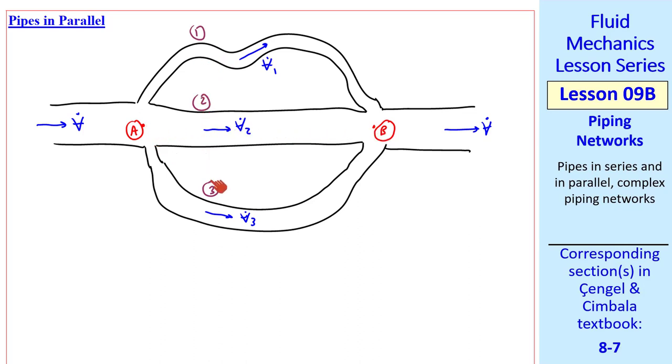Consider points A and B at these pipe junctions. Which branch, 1, 2, or 3, has the larger head loss? Most people would say 1 because it's the smallest diameter, and it has some extra elbows. Let's even put a partially open valve in branch 1.